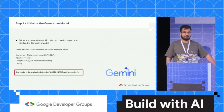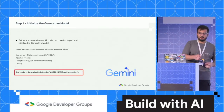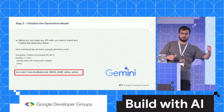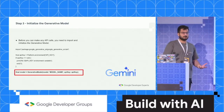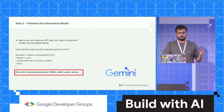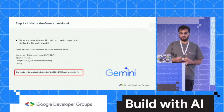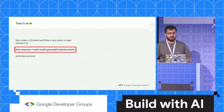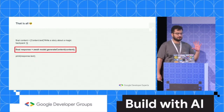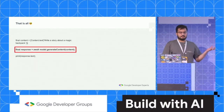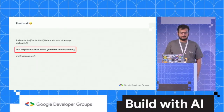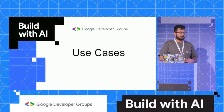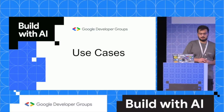The third step is very simple. You have to create an instance called model, which takes in a model name and the API key that we copied earlier. It gives you access to functions like model.generateContent and model.generateContentStream if you are working with streaming. You can just use model.generateContent to get a response. The content variable takes in the prompt text that you want to work with, and it will simply give you a response that you can build out in your UI.